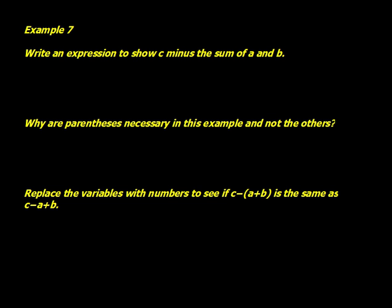Number 7. Write an expression to show C minus the sum of A and B. So this one's a little different. We're going to start out by showing C minus the sum of A plus B. So this time, why are the parentheses necessary in this example and not in the other examples?